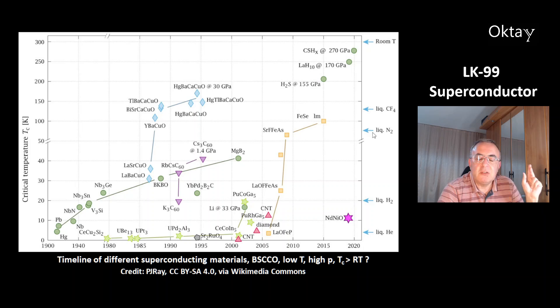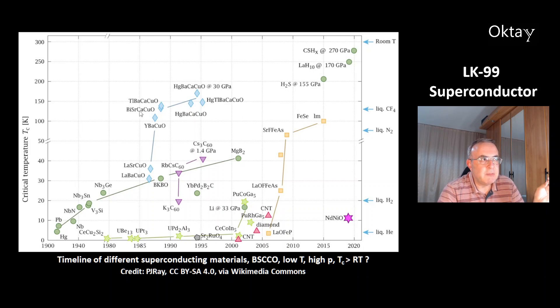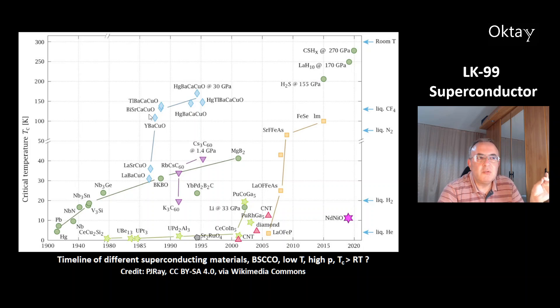The critical temperature of cuprate superconductors is above the boiling point of liquid nitrogen, which is at 77 Kelvin or minus 196 degrees Celsius. For example, here we have BISCO — that's bismuth, strontium, calcium, copper, oxide.